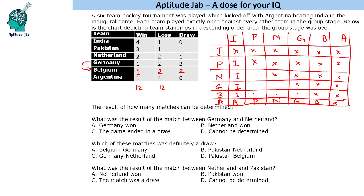Let's consider Belgium versus Germany. Germany has one win — against Argentina. Belgium also has one win — against Argentina. Both have won only one match. So in the match between Germany and Belgium, neither could have won: if Germany won, they'd have two wins; if Belgium won, they'd have two wins. But both have exactly one win, so Germany versus Belgium must be a draw.